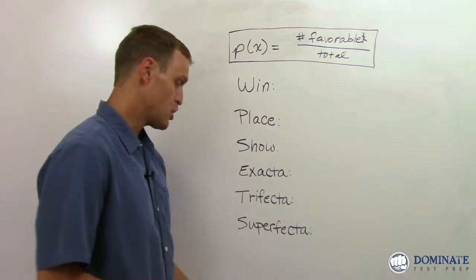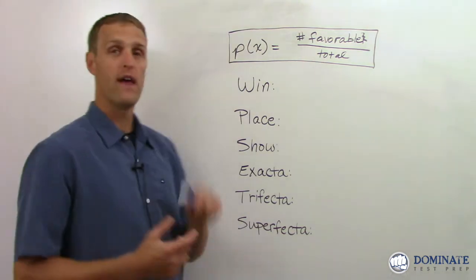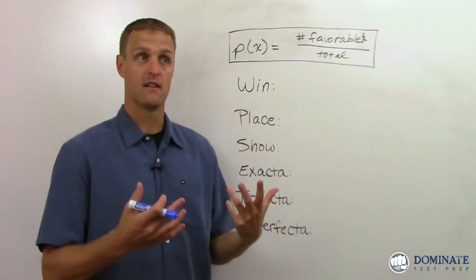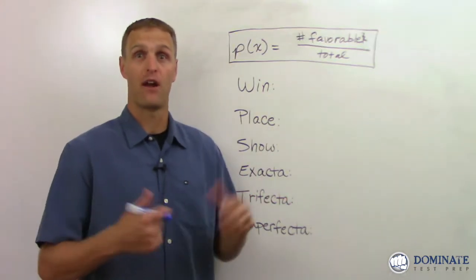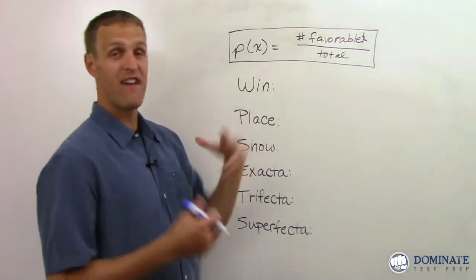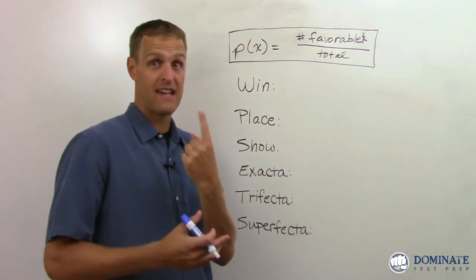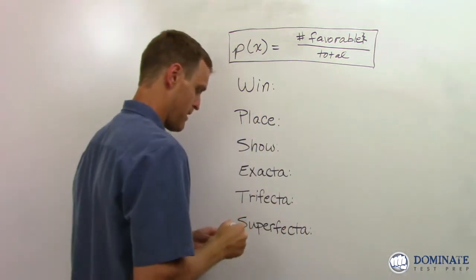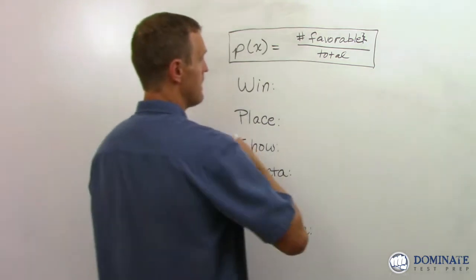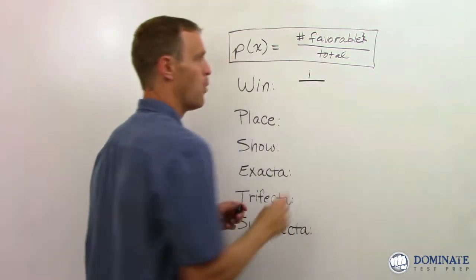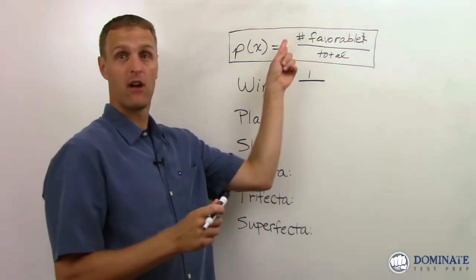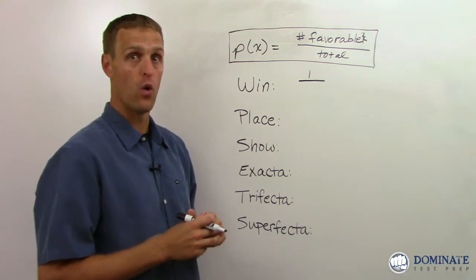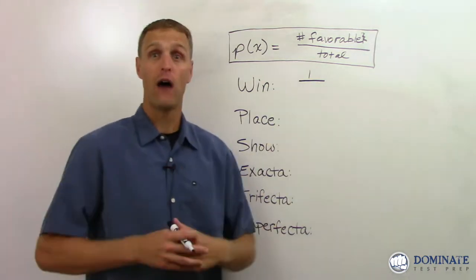The first is you could bet on a horse to win. And that literally means you say, okay, there's one horse in the race and I want that horse to win. I think that horse is going to win. And so the number of favorable outcomes, how many horses can win? Only one horse can win. So there is one favorable outcome in that case. If you're betting on a horse to win, it must actually win. There's only one horse.